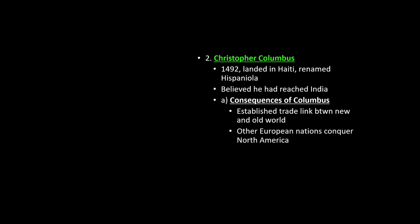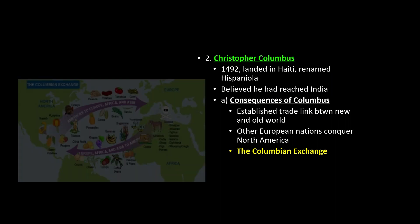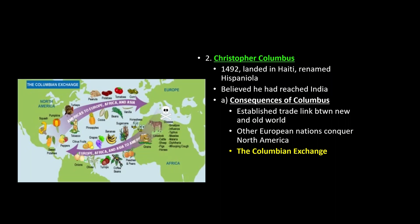Other European nations are going to conquer North America — the Spanish, Portuguese, French, Dutch, and British are going to come in, conquer, and create colonies. That's where you get the 13 colonies that eventually lead to the United States. You get trade going back and forth — what we call the Columbian Exchange. That's the term historians use to describe the transfer of plants, animals, resources, and disease from one continent to the next.